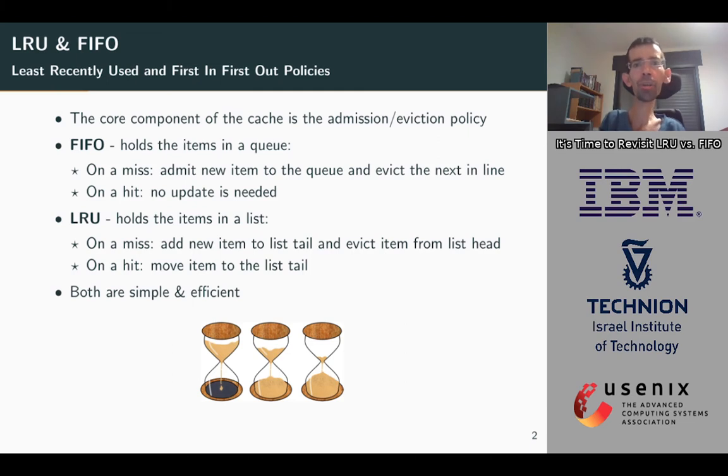The only difference between them is on a hit. On FIFO, we do nothing. On LRU, we move the item that was requested to the tail of the list, and it is now considered as the newest item in the cache, which means it will be evicted later. Both policies are very efficient and simple to implement.